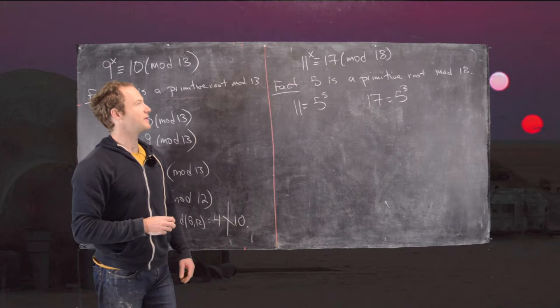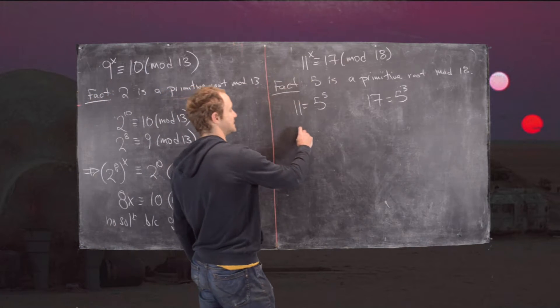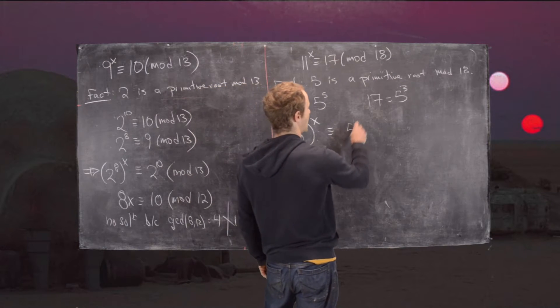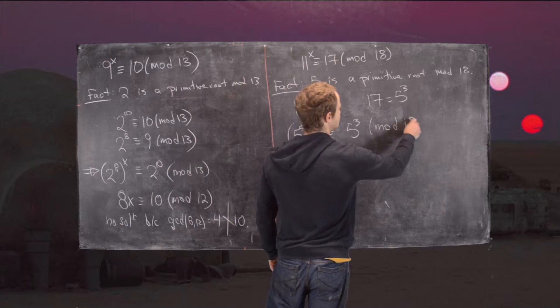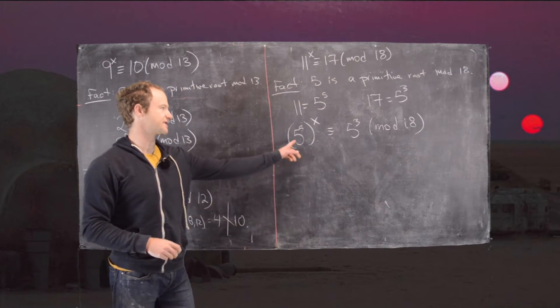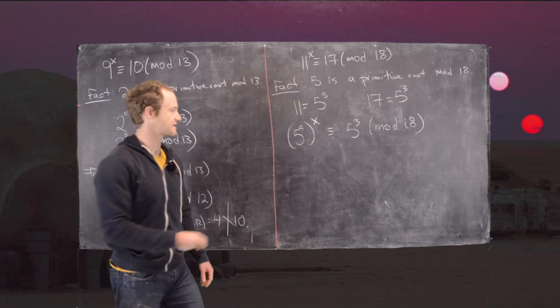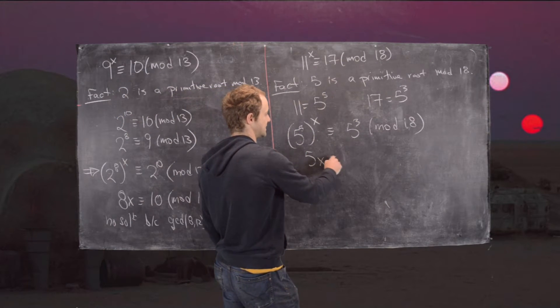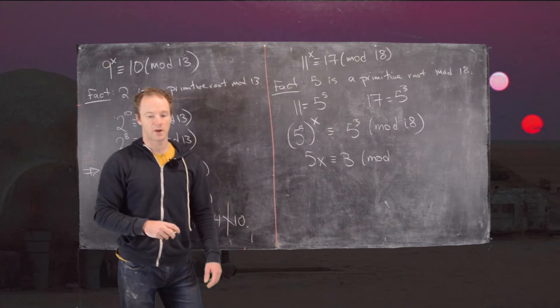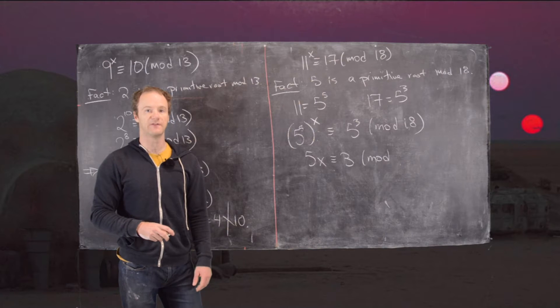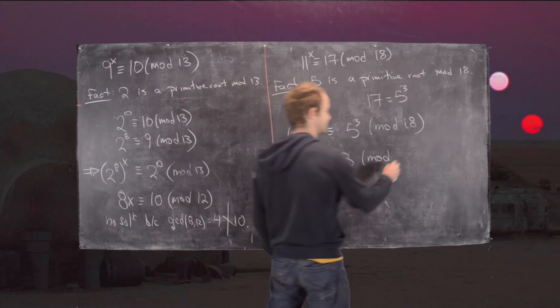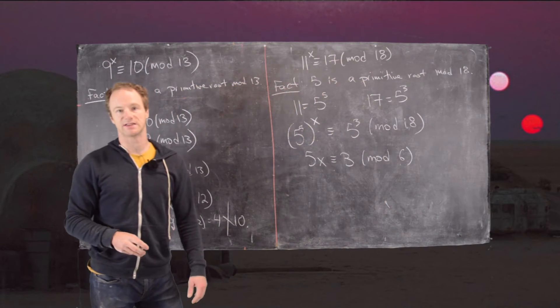Now what we can do is write this as 5 to the 5th all to the x is congruent to 5 cubed mod 18. We can extract our exponents using exponent rules here, so this is 5 to the 5x. That will give us 5x is congruent to 3. But now we're not working mod 18 anymore. We're working mod the Euler phi function of 18. The Euler phi function of 18 is 6, so we get mod 6.